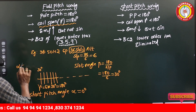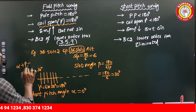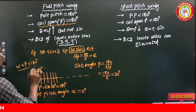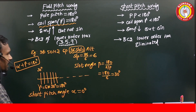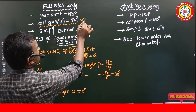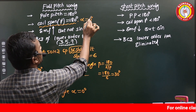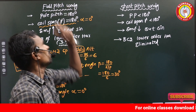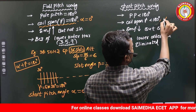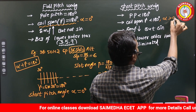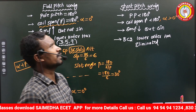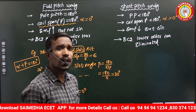Always the short pitch angle alpha and the coil span gamma must together equal 180 degrees. Here the coil span is 180 degrees and the short pitch angle is zero degrees — that is full pitch winding. For short pitch winding, the coil span is less than 180 degrees and the short pitch angle is greater than zero degrees.